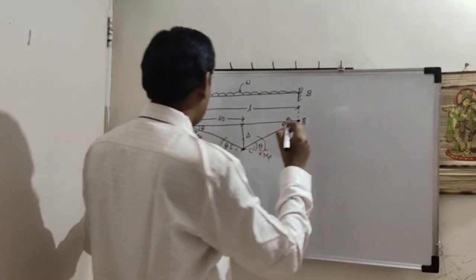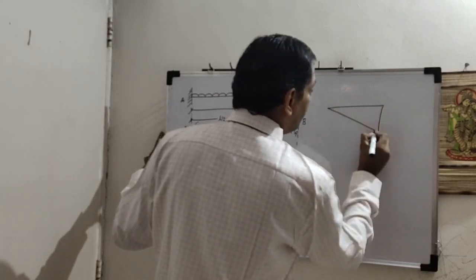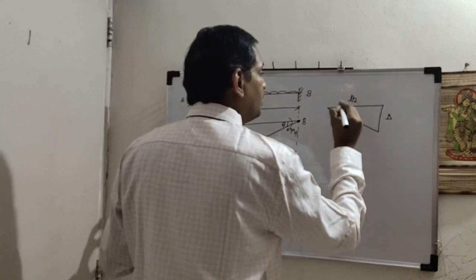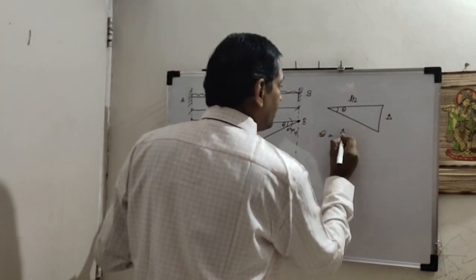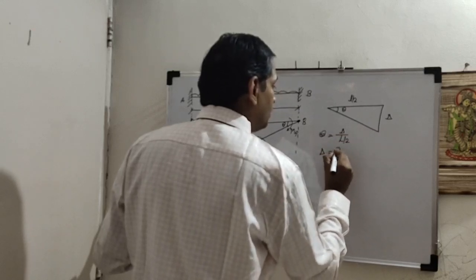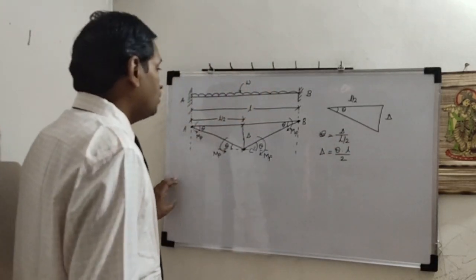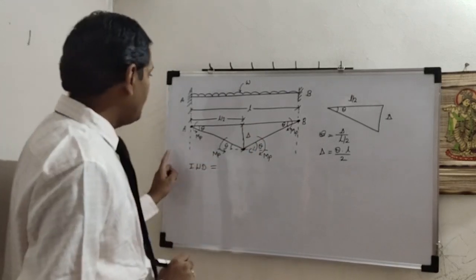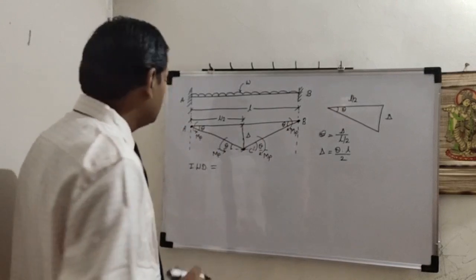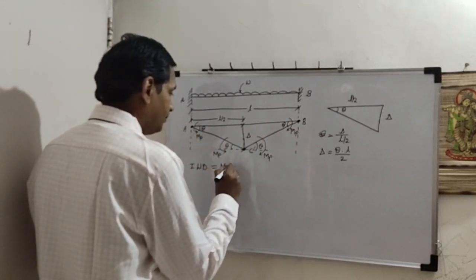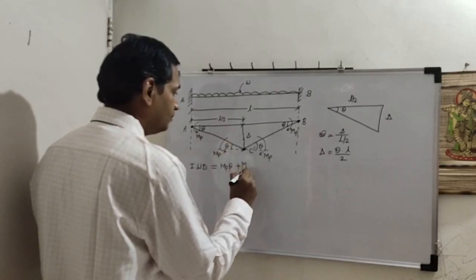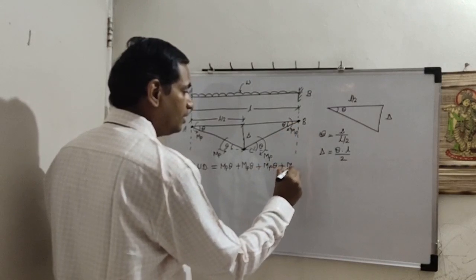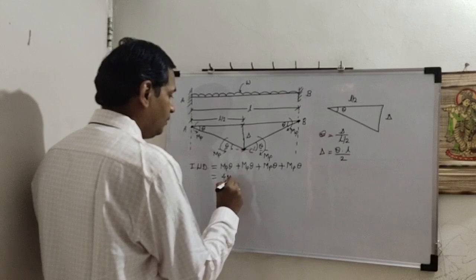We take out the right-angled triangle for simplicity, as it makes plastic analysis easier. This side is L by 2, this is delta, and the rotation is theta. So theta equals delta divided by L by 2, giving delta equals theta times L upon 2. For the internal work done, there are four plastic hinge points — one at A, one at C dash, one more, and one at B. So internal work done is 4·MP·theta.